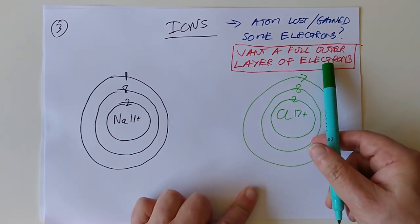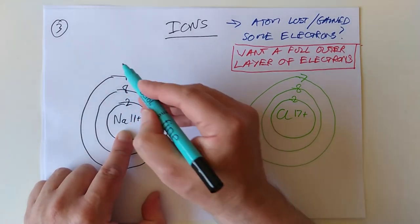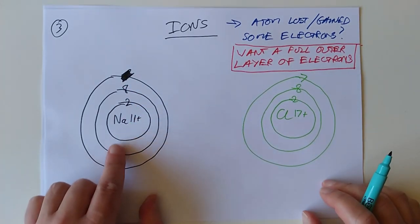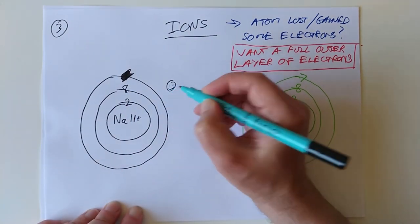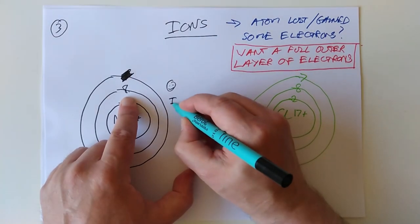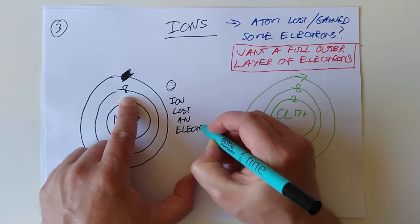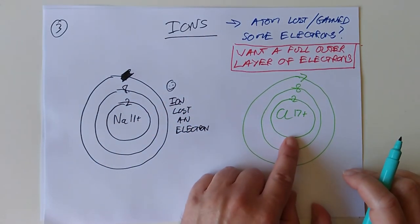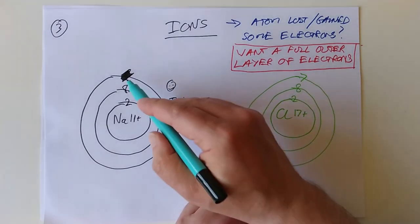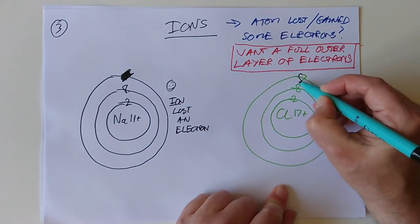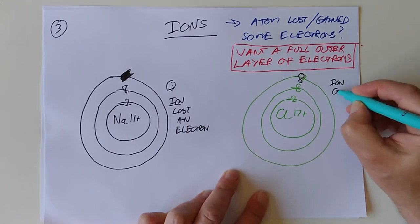Both atoms want a full outer layer. This sodium here — gain 7? No, let's just lose that one electron entirely. So that one goes, and now its outer layer becomes the full layer of 8. Happy atom. Only it's no longer an atom — now it's an ion, because it has lost an electron. Right next door was a chlorine atom at 2, 8, 7. That electron transfers over to the chlorine, and it becomes 2, 8, 8. Now this chlorine has a full outer layer as well, so this is now an ion too, because it's gained an electron.